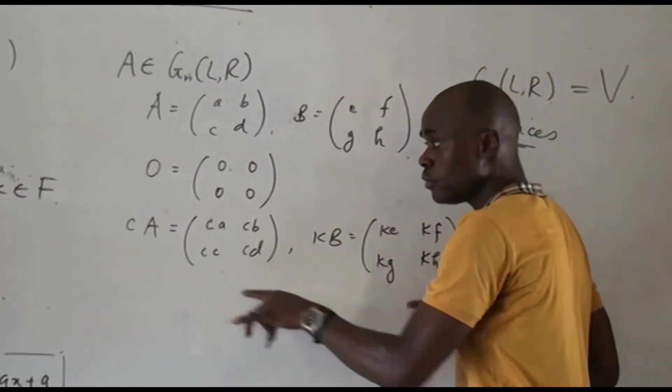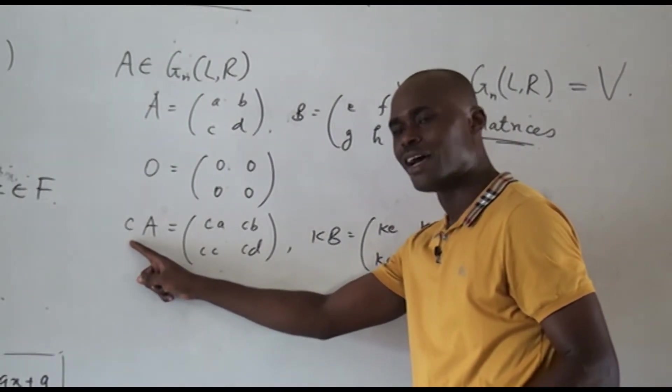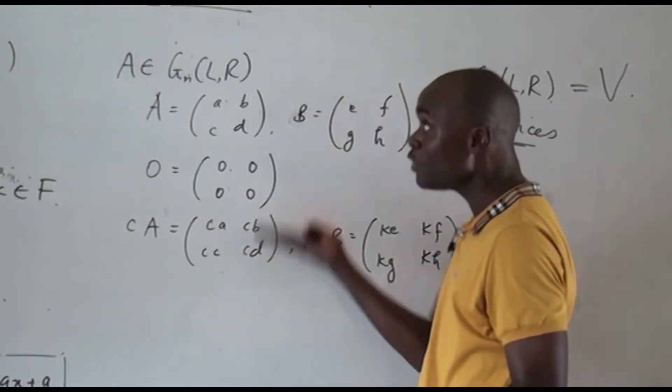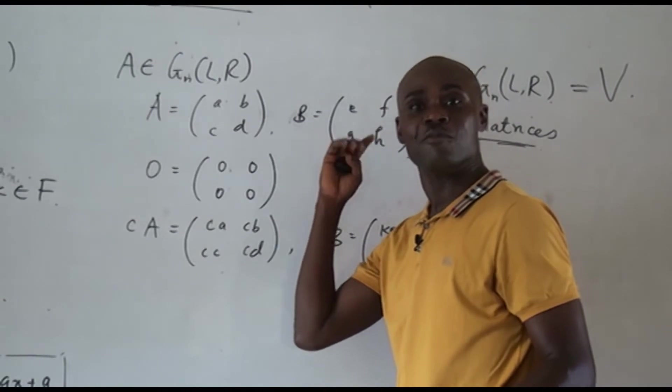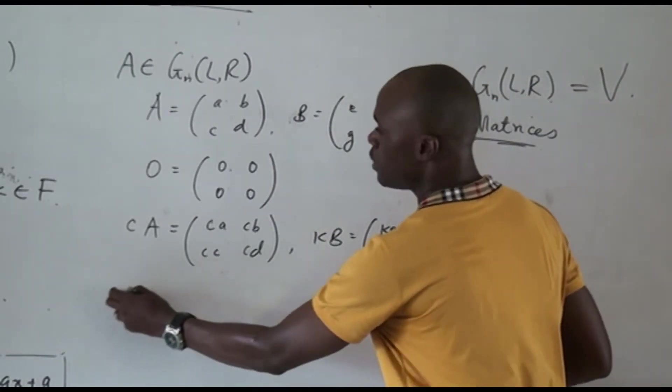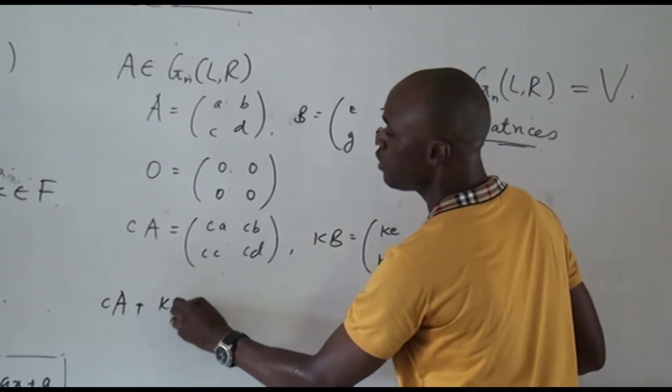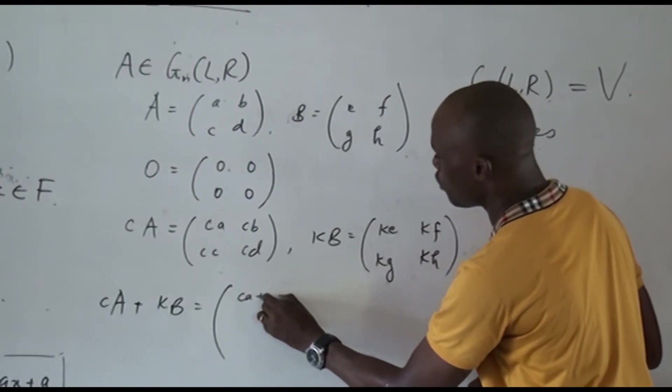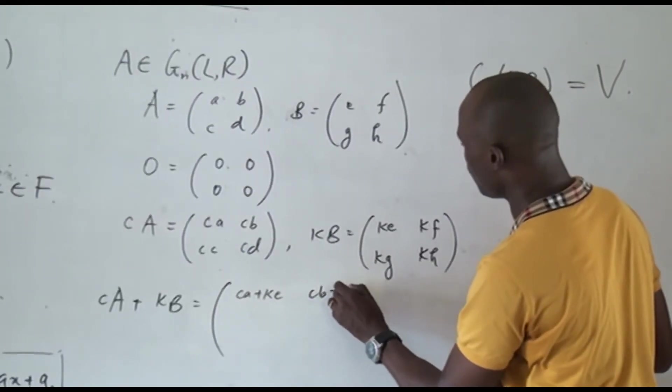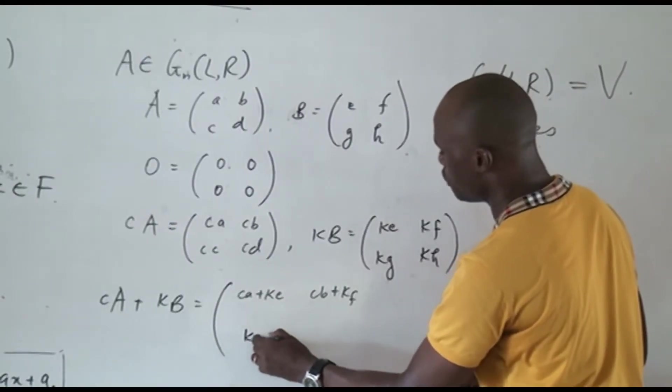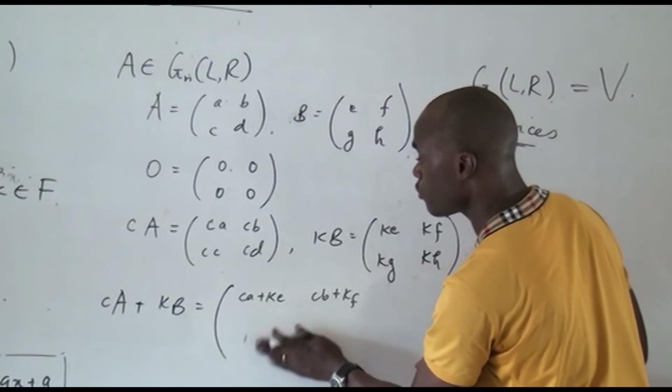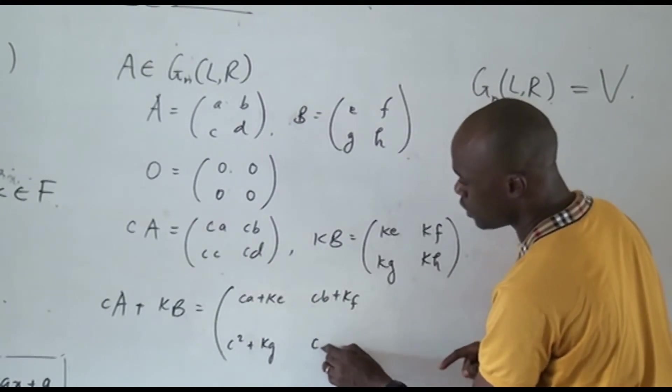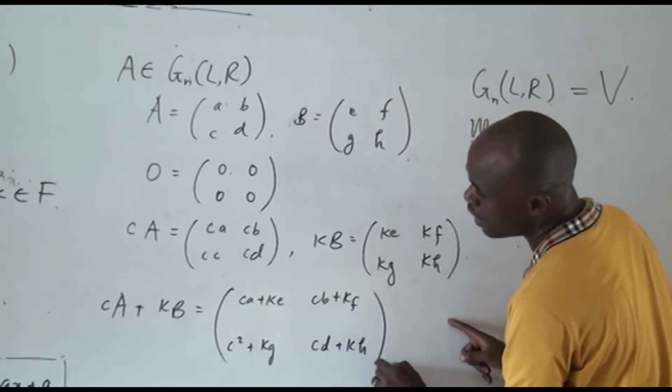So, if we add these two, and I hope you already said that multiplying a scalar with this is actually giving us a matrix, because this is just a real number. This is going to give you a real number, and it still gives you this form of matrices. So, this is going to be C A plus K B is going to give us, so we add these two matrices, and that is going to be (ca+ke cb+kf; cc+kg cd+kh). And these are just numbers.